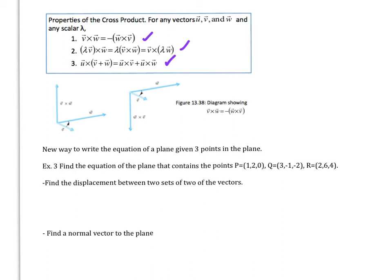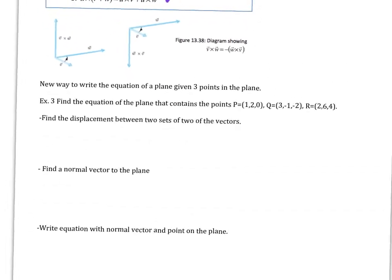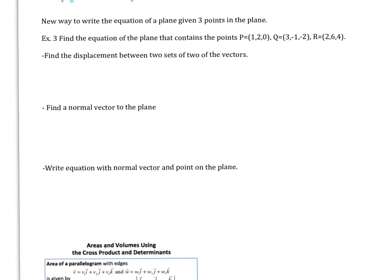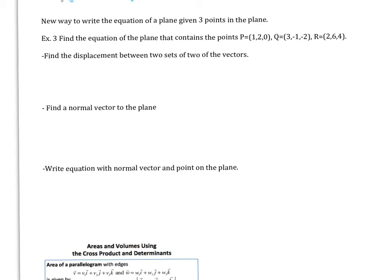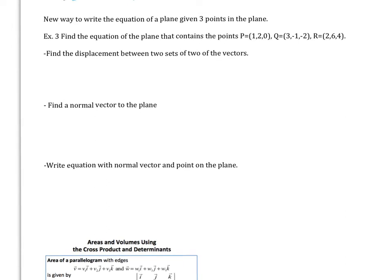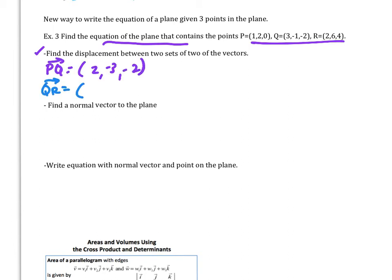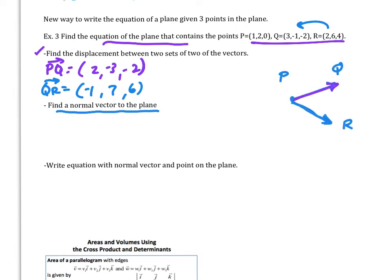One last example: here is a new way to write the equation of a plane given three points in the plane, using vectors — which we did earlier in chapter 12. So we want to write the equation of the plane that contains these points. We want to find the displacement between two sets of those vectors. So I did PQ, and now I'll do RQ. That's going to be 4 minus negative 2, which would be 6; 6 minus negative 1 is 7; and 2 minus 3 is negative 1. Those are the displacement vectors.